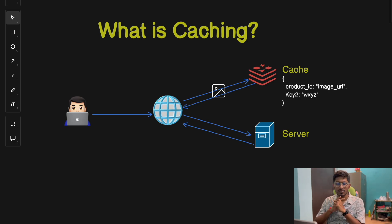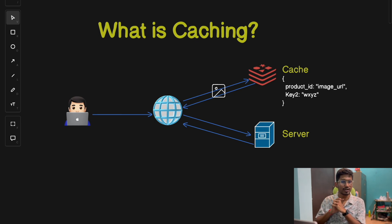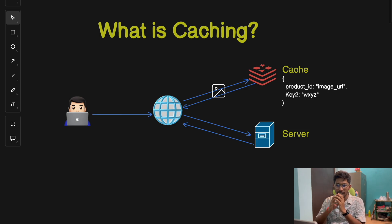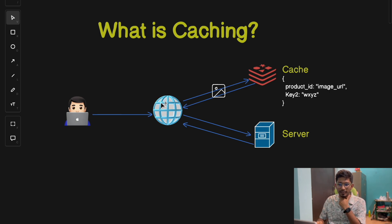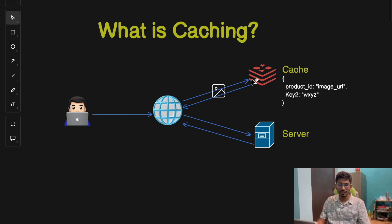So what exactly is caching? Caching is a technique that stores frequently accessed data in a temporary high-speed data storage layer. The goal is simple: to reduce the time it takes to access data and consequently improve application performance. Imagine you are browsing an online shopping website and repeatedly view the same images of a product. Instead of downloading these images every time from a database, you can cache these images so they load almost instantly the next time.